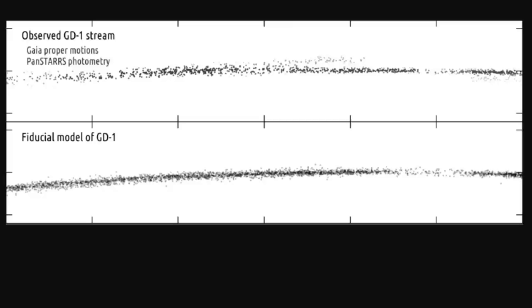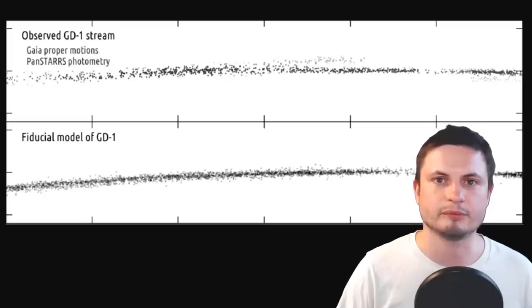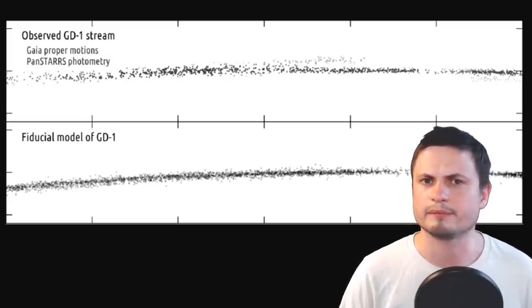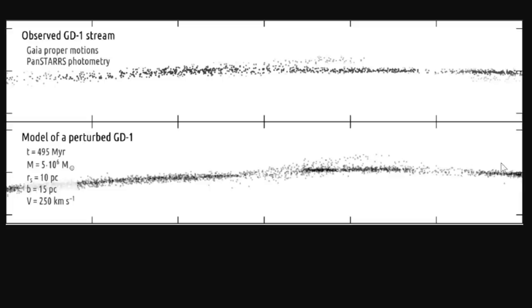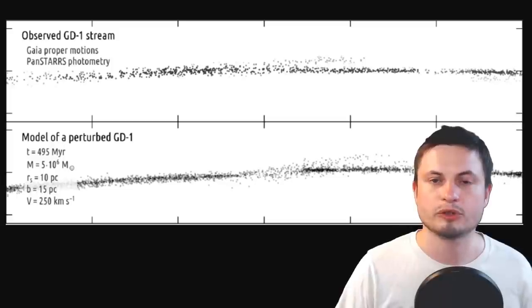When Anna was studying the GD1 stream, she simulated what it should look like — but then realized it looked different from expectations. There were unusual star formations sticking out as if something punched through them. The Gaia telescope data was accurate, so something was happening. She created another simulation where something perturbed the stream, and it looked like what we're actually seeing. Specifically, the perturbation happened approximately 495 million years ago.